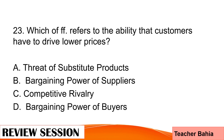Which of the following refers to the ability that customers have to drive lower prices? A. Threat of substitute products, B. Bargaining power of suppliers, C. Competitive rivalry, or D. Bargaining power of buyers? The answer is letter A. Threat of substitute product.